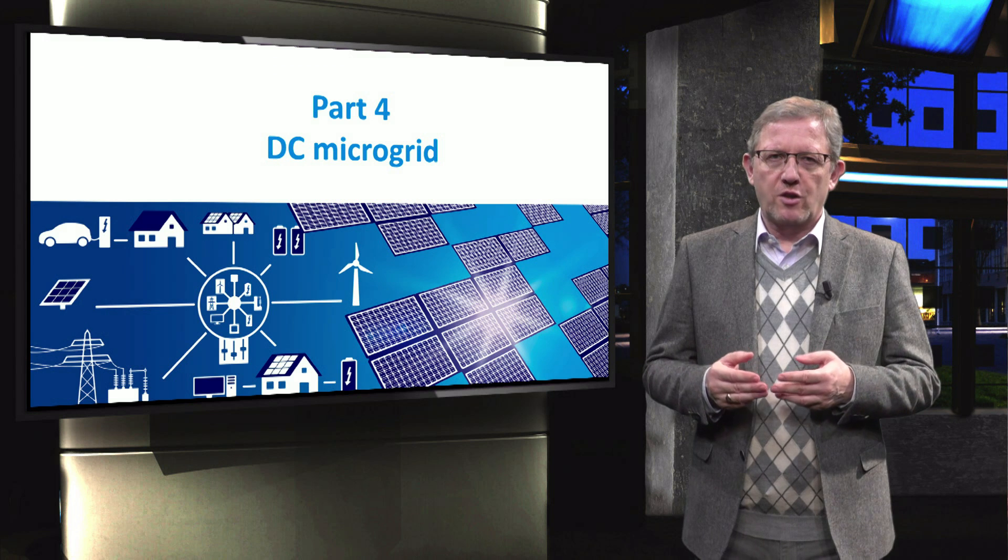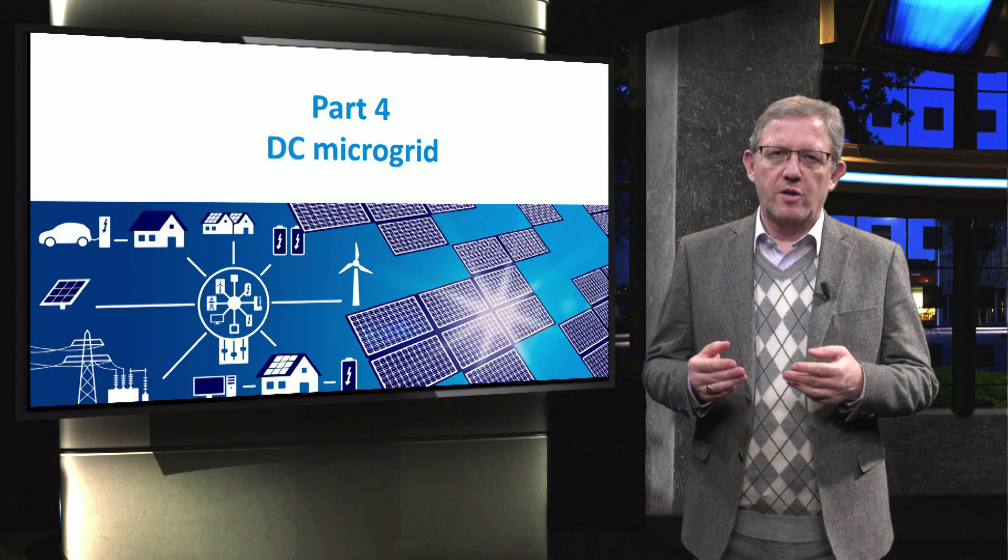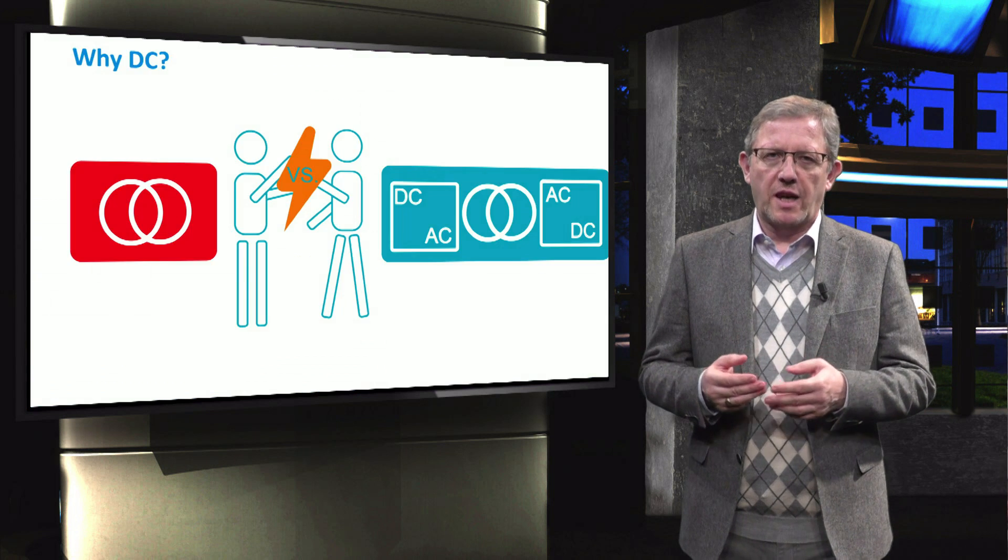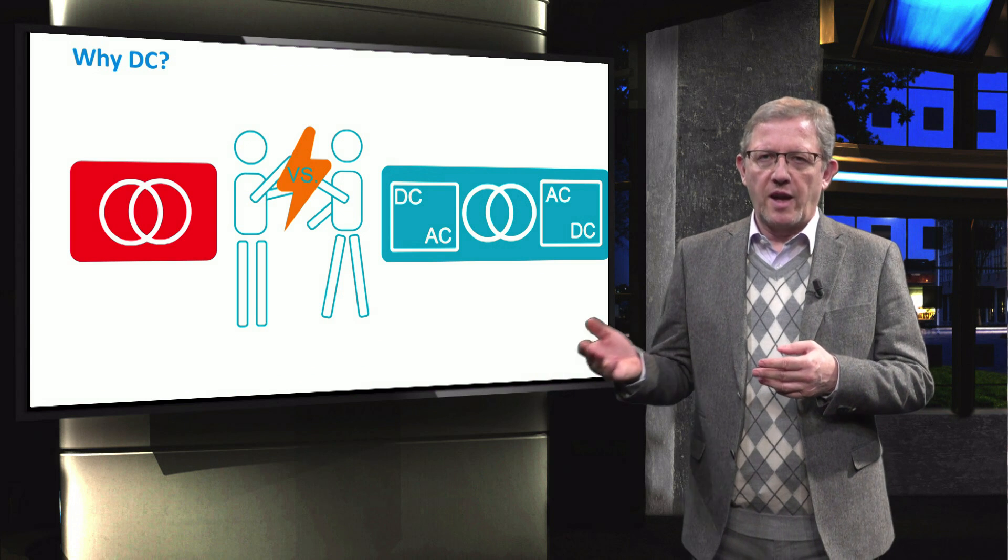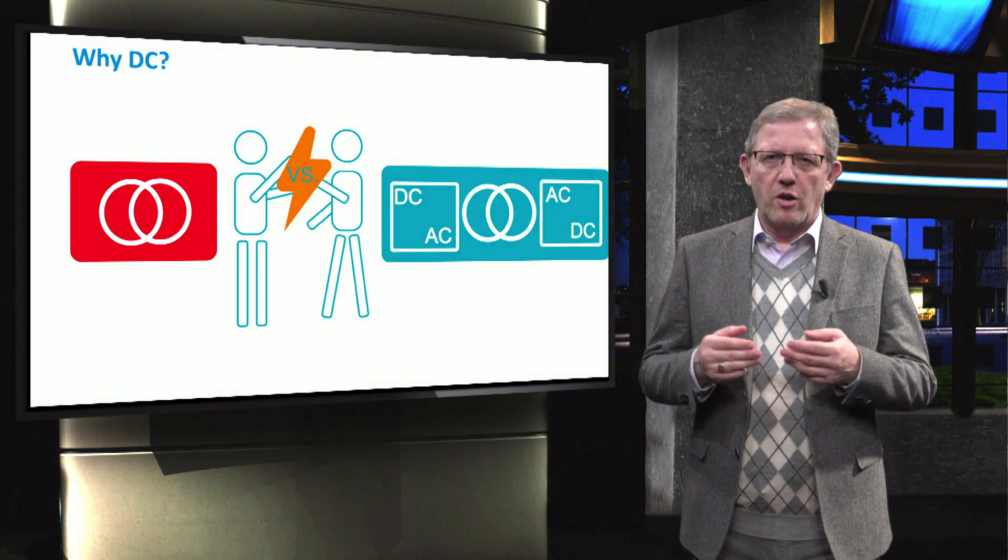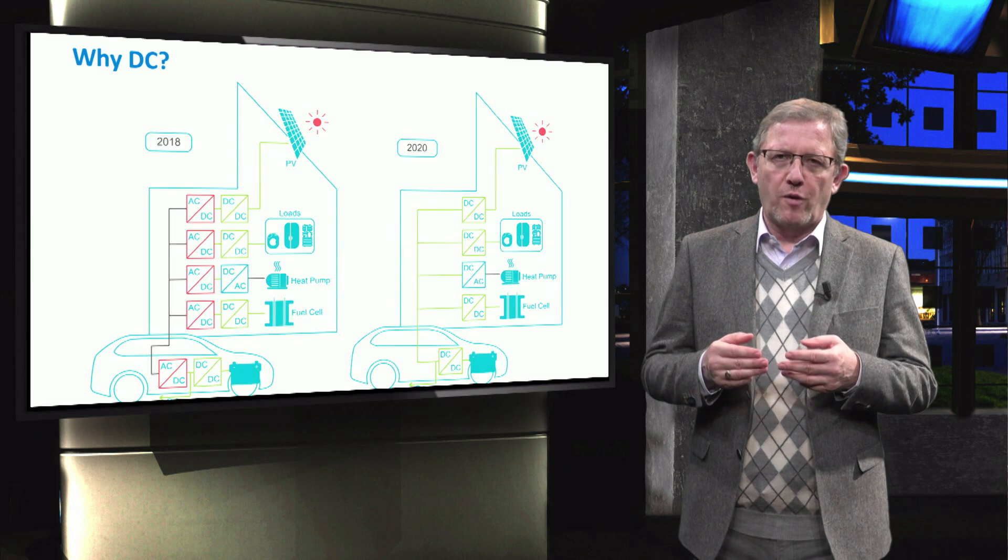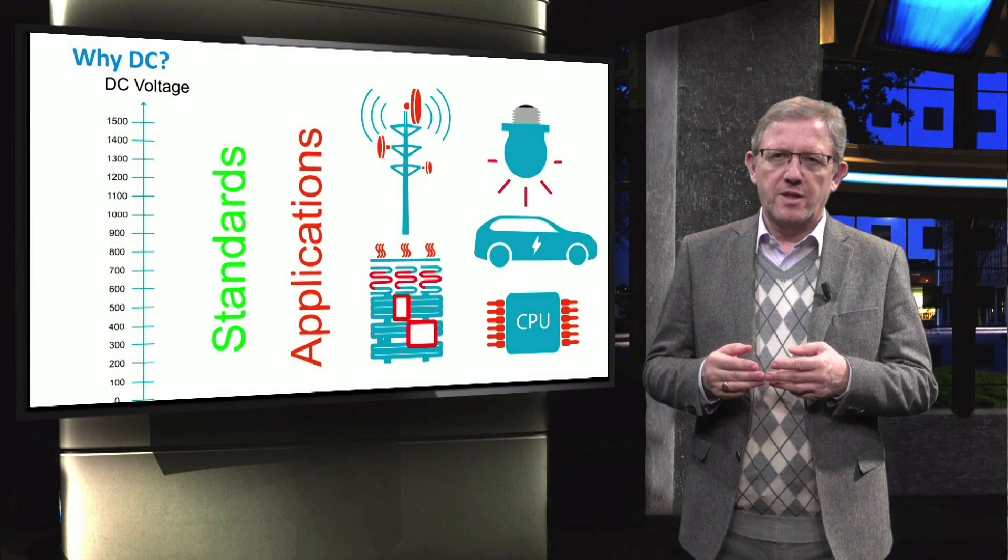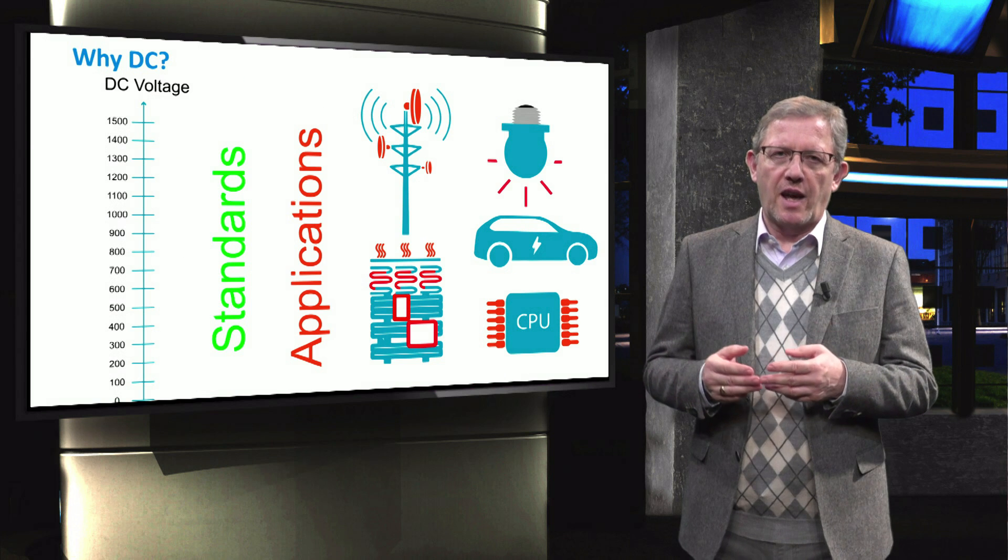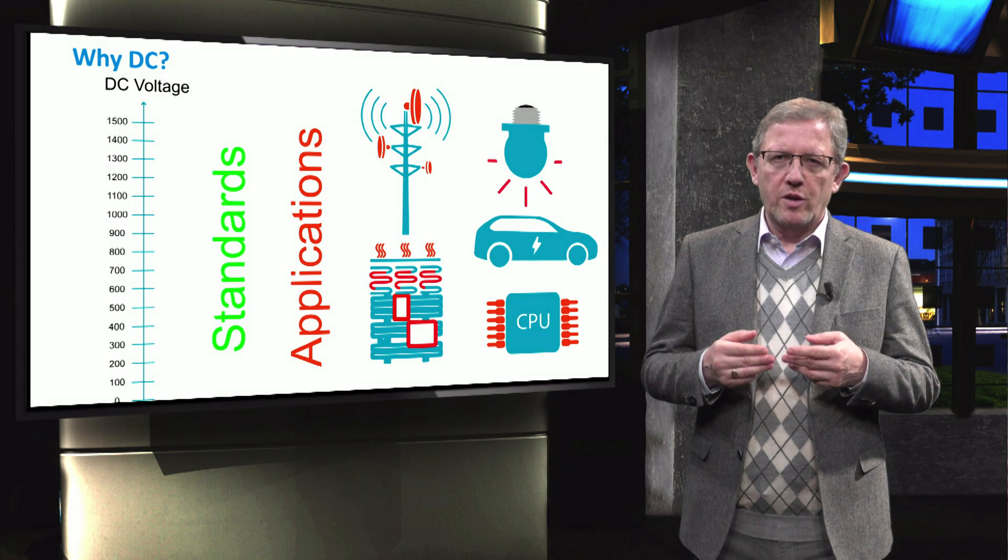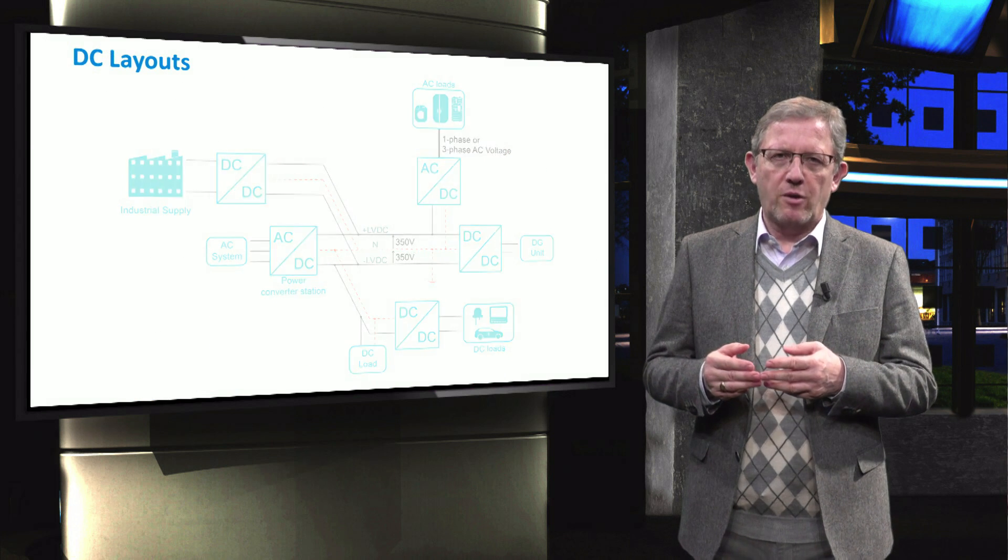In the fourth section of this course, we will focus on the DC microgrids. We will discuss the DC technology and compare it to the AC microgrids. You will learn about the specific advantages of DC microgrids and on top of this, you will learn about the DC standards and applications in real life. We will also look into some specific DC microgrid topologies.